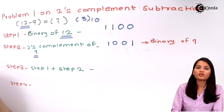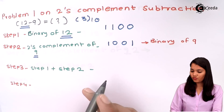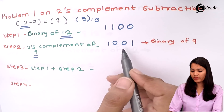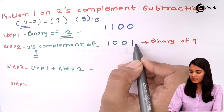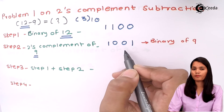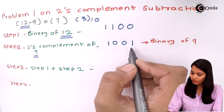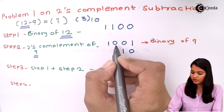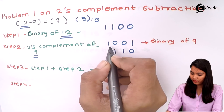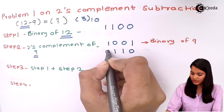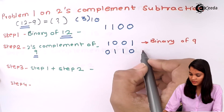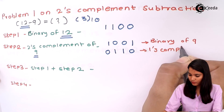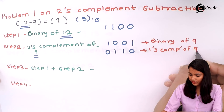Now within step two, we find the one's complement of 9. To find the one's complement, we replace each digit with its opposite value: 1 is replaced by 0, 0 is replaced by 1, 0 is replaced by 1, and 1 is replaced by 0. This result — 0 1 1 0 — is the one's complement of 9.